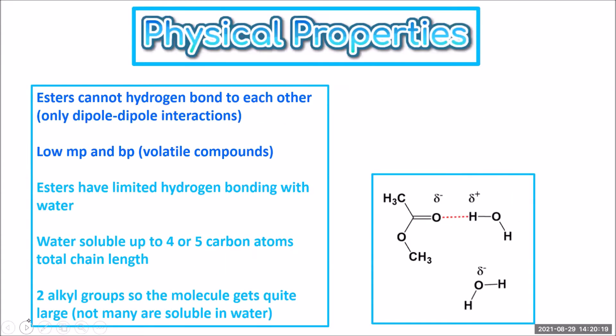Physical properties of esters: esters do not have a hydrogen, so they cannot hydrogen bond to each other. They can only have dipole-dipole interactions, because the carbonyl group is of course polar. We have a delta minus and a delta plus, and then we have our oxygen delta minus, so we can get dipole-dipole interactions.